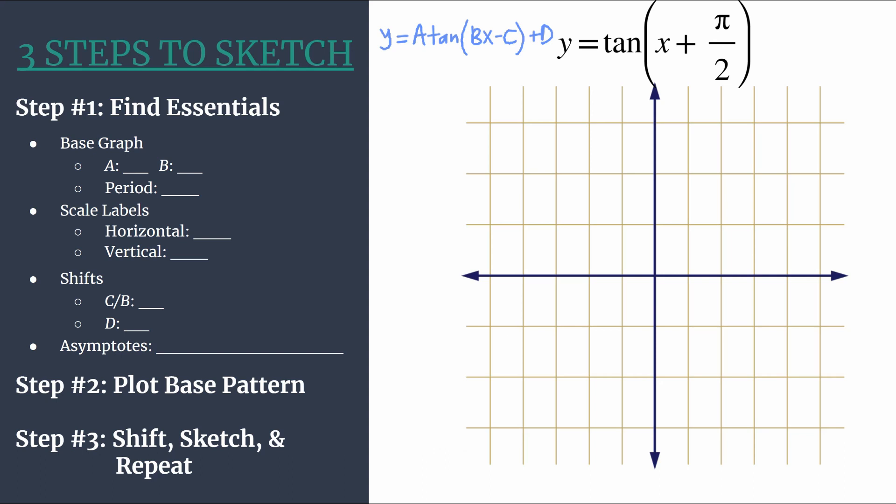So jumping in, step one is to find the essentials. We'll start by taking a look at the base graph and then getting our axes labeled. From our general form equation, we see that a is the coefficient in front of tangent. And since we don't see a particular number there, we know a will be one. This will help us with our curve setting points or curve shaping points. And those points will be the same as the original graph of tangent since a is one.